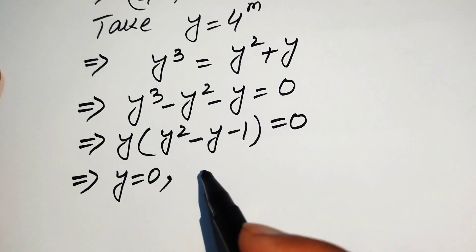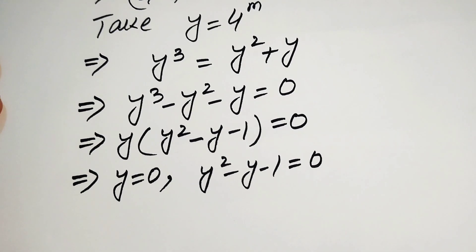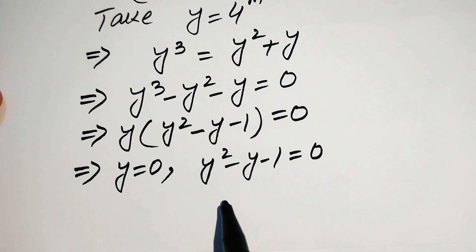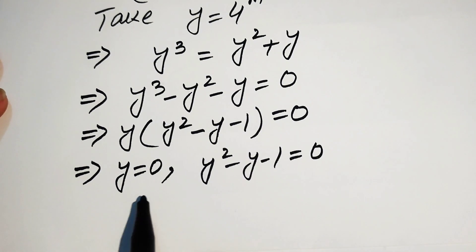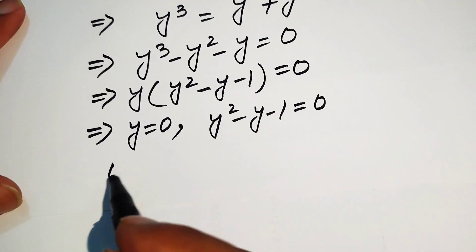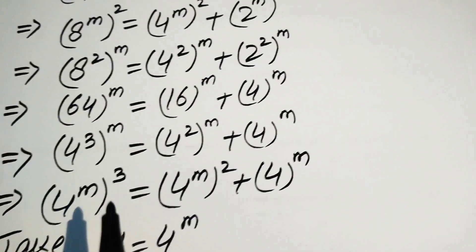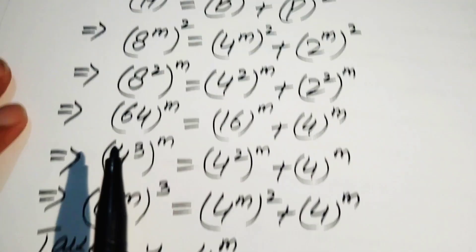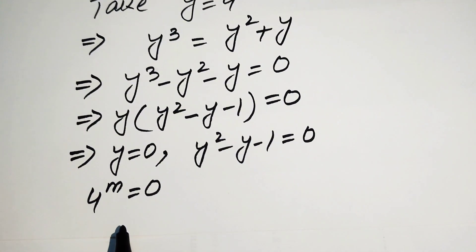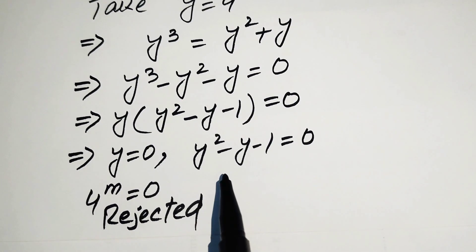We factor out y, giving y times (y squared minus y minus 1) equals zero. This splits into two cases. Case 1: y equals zero. Since y equals 4 to the power of m, this gives 4 to the power of m equals zero. But 4 to the power of m represents the base of the right triangle, and no side length can be zero, so we reject this case.